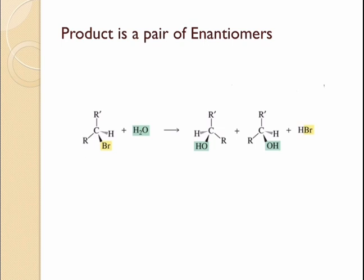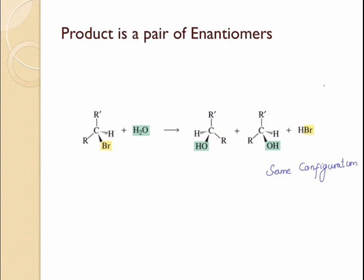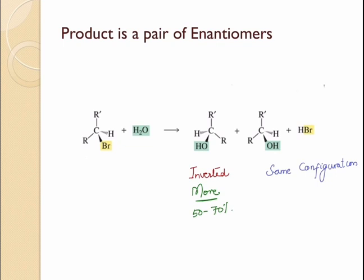When you perform an SN1 reaction of an alkyl halide where there is an asymmetric center attached to the leaving group, it is going to lead to the formation of two stereoisomers — one with exactly the same configuration as the initial alkyl halide, and one with inverted configuration. Although you might expect both products to form in equal amounts, a greater amount of the product with the inverted configuration is obtained in most cases — typically about 50 to 70% of the product formed in an SN1 reaction is the inverted product.